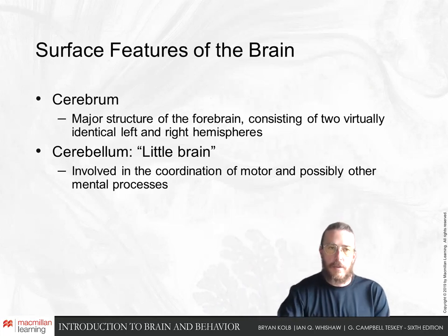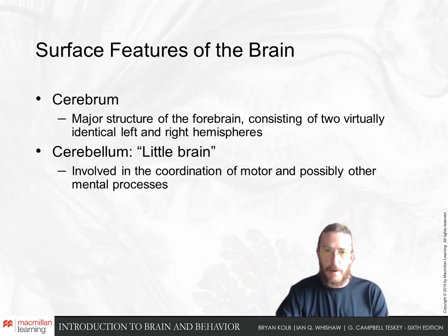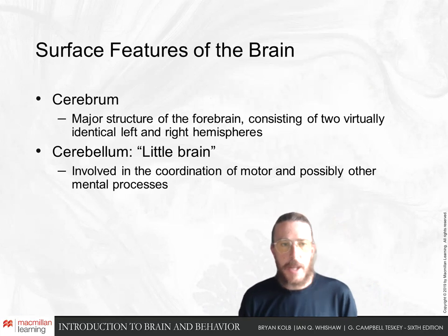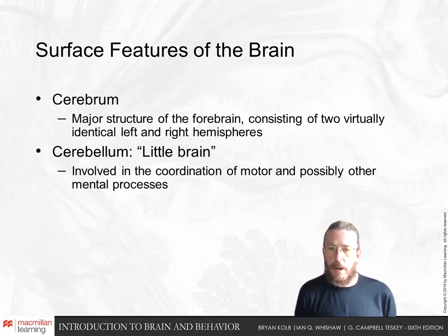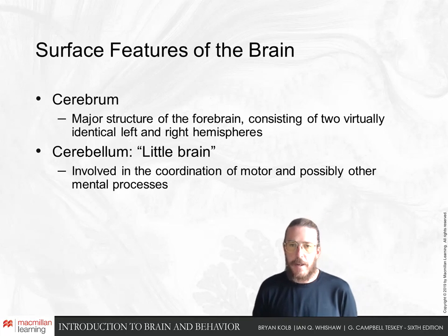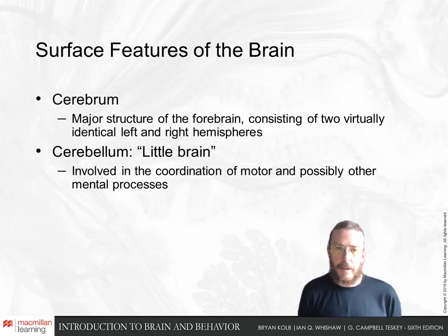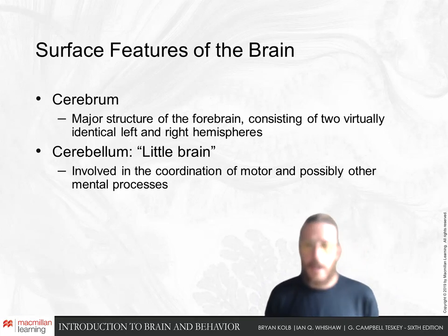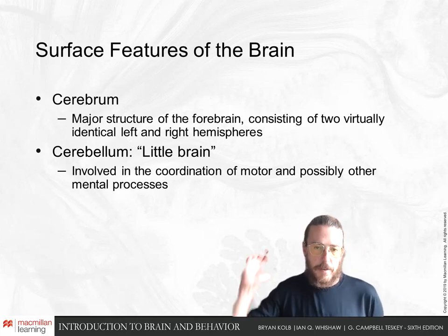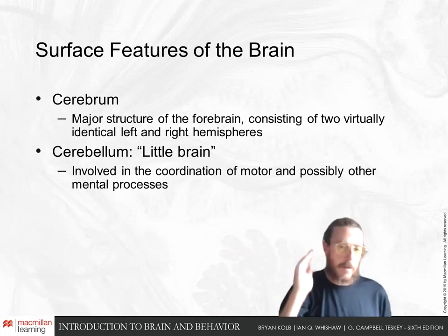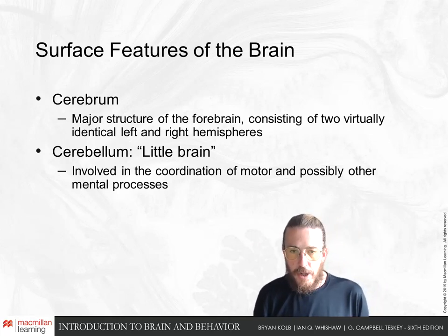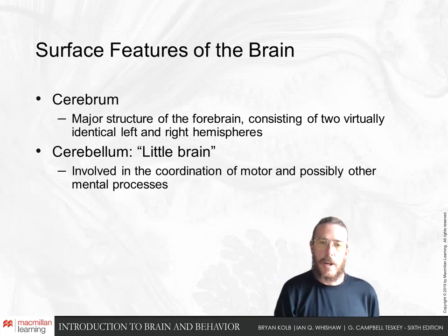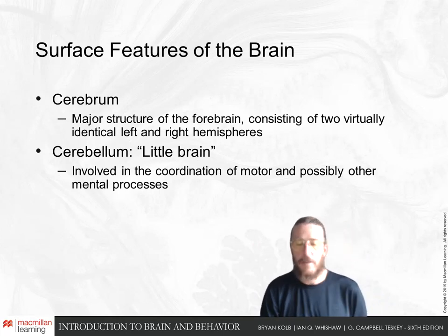The cerebrum and cerebellum are two parts of the brain visible from the outside surface. The cerebrum is the major forebrain structure — the wrinkly brain with left and right hemispheres. The cerebellum is this 'little brain,' seen below the occipital lobe, that is more evolutionarily ancient and is involved in coordination of motor and other mental processes.